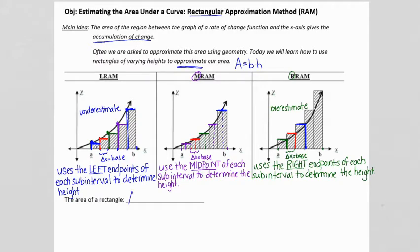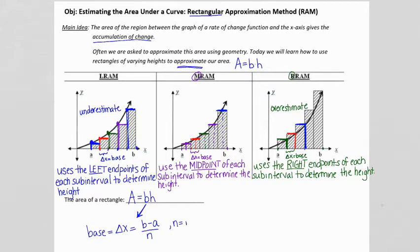When looking at the area of each rectangle, the area formula is base times height. The base of our rectangles is the small change in x. We take the whole interval from A to B, subtract B minus A to get the length of the whole interval, then divide by N, where N equals the number of subintervals we're creating. This is a formula to memorize: delta x equals B minus A divided by N. These are always equal subintervals.